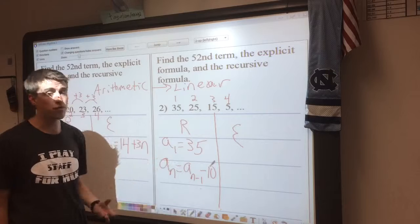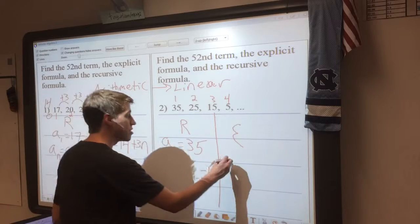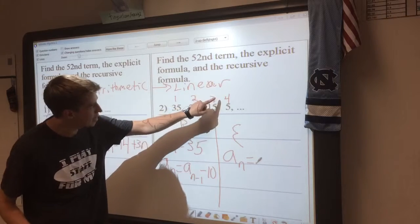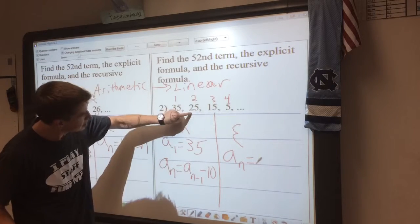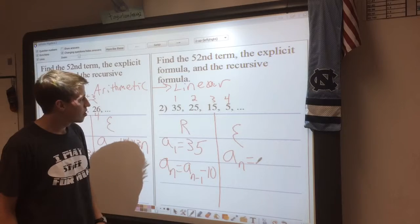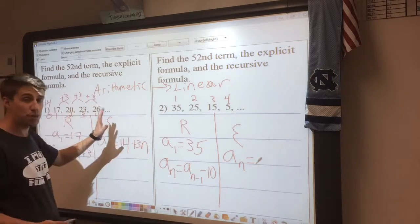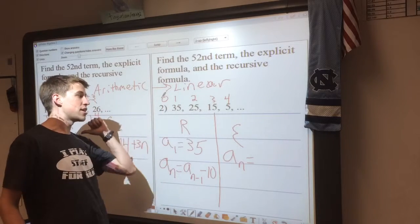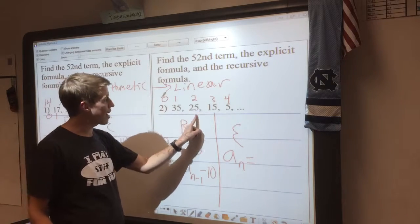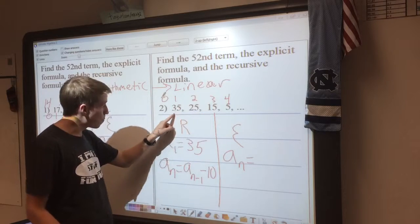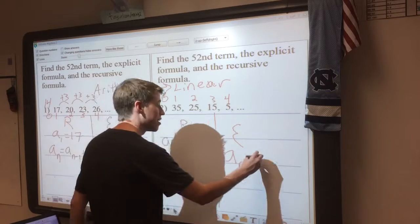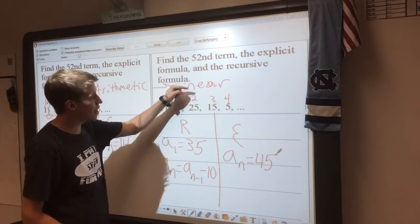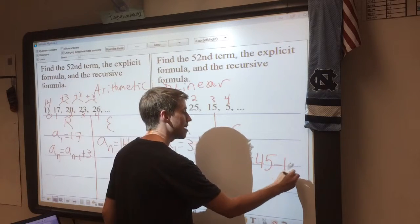Now, once again, the explicit formula is a little bit different. It's still going to be A sub n, but now we need to be able to plug in any of those numbers to get the result. And like I said over here, the explicit formula, the starting value is at 0. So we need to go back one step. So since I'm subtracting 10 this way, if I go back one step, I need to add 10 to get to 45. And it looks like I'm just subtracting 10 every time. So I'm going to subtract 10n.